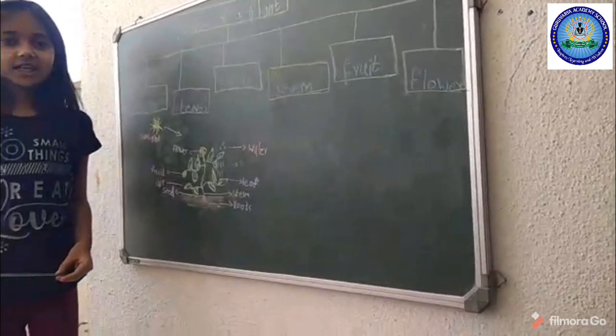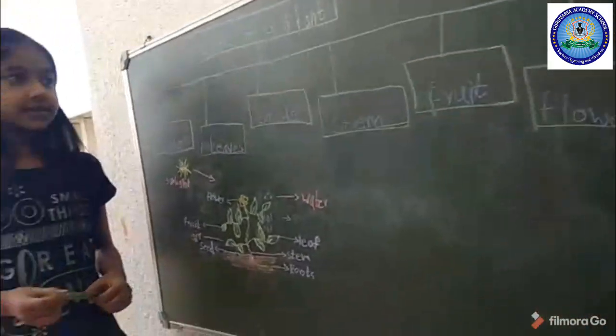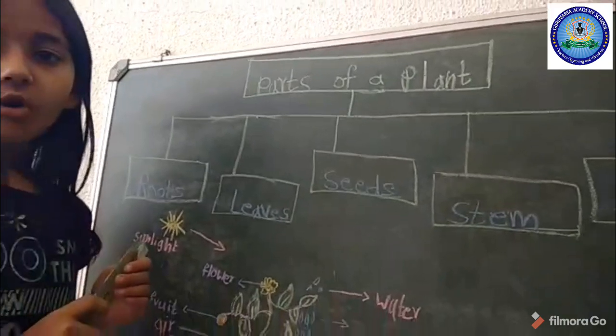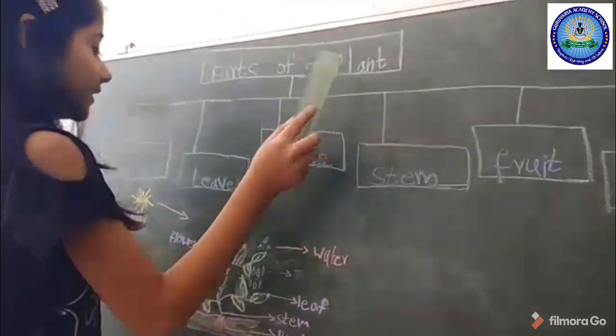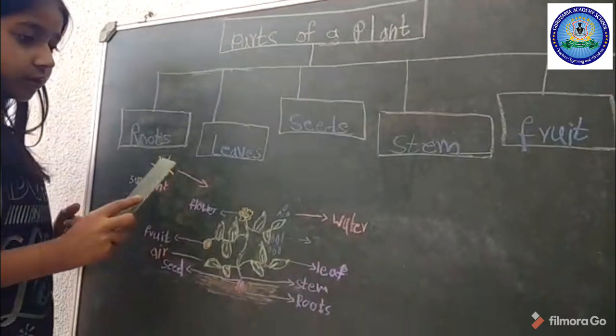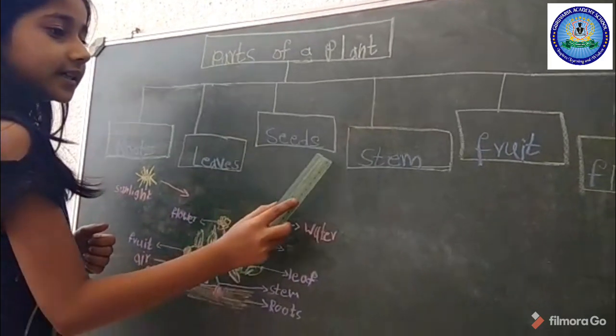We are discussing about plants, the world of plants. Parts of a plant: fruits, leaves, seeds, stem, fruit and flower.